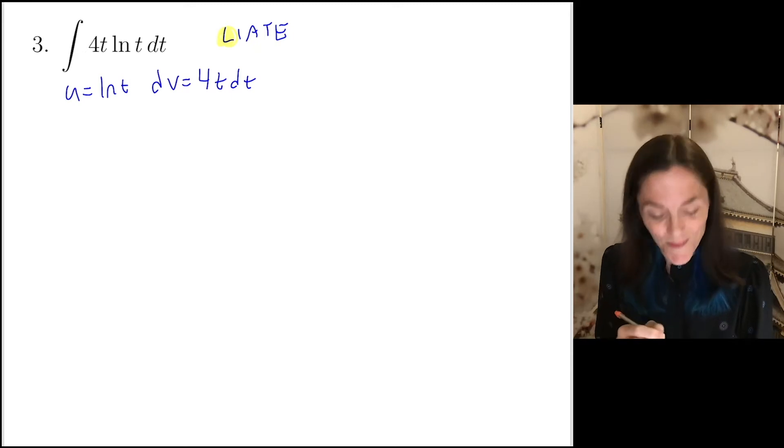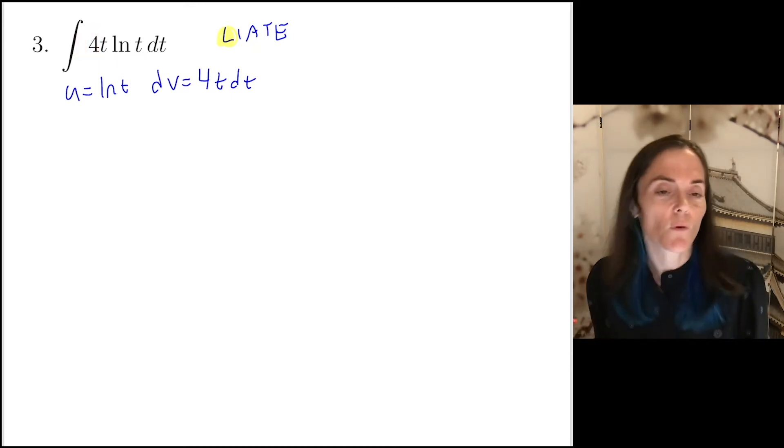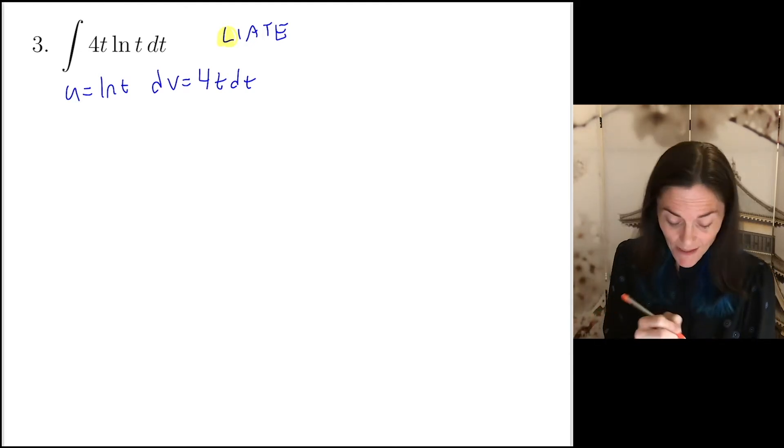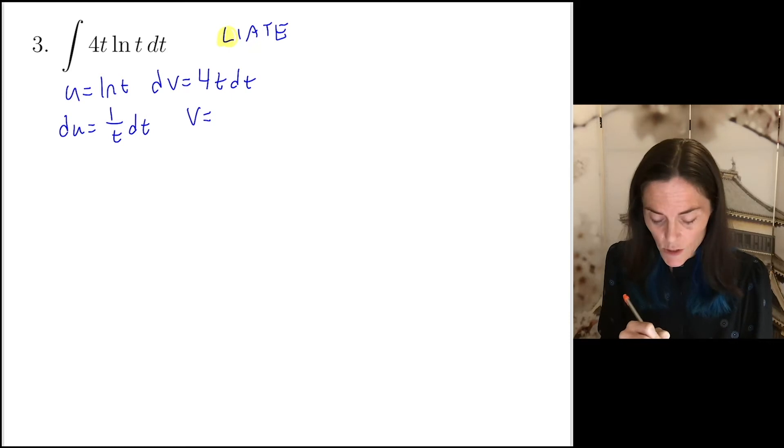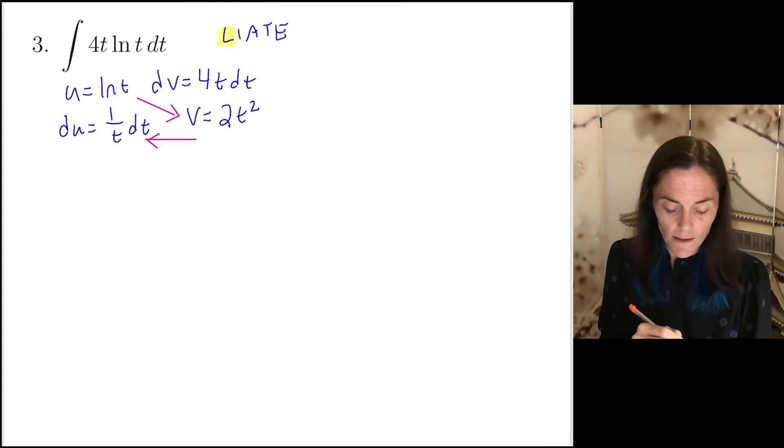If we follow our acronym, immediately we have a log and so u will be ln t and dv will be everything else, 4t dt. Now you could, just as a comment, you could group this four with the natural log if you wanted to but I just grouped it with a t. Now, we take the derivative, 1 over t dt. And to calculate v, we integrate, this will be 2t squared.